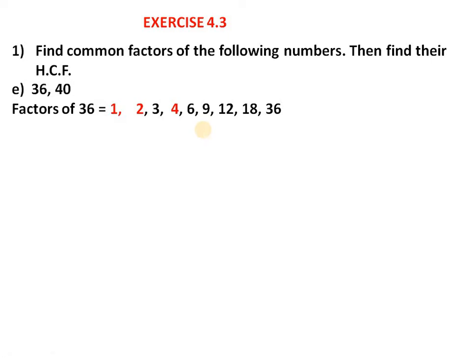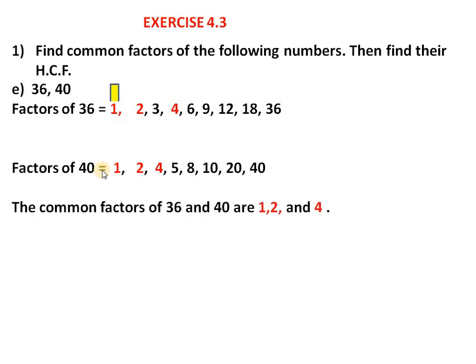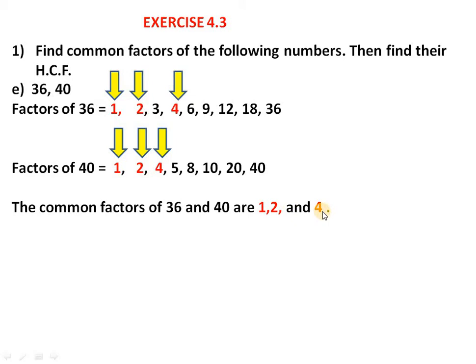The factors of 40 are 1, 2, 4, 5, 8, 10, 20, 40. The common factors of 36 and 40 are 1, 2, and 4 only — other numbers like 3, 6, 9, 12, 18, 36 are not shared. The highest common factor is 4. Therefore, HCF of 36 and 40 is 4.